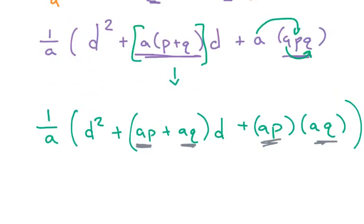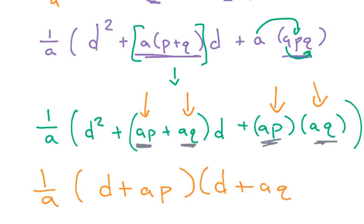So notice that p is a quantity and q is a quantity, and we said that that becomes p plus q and pq. So if that is true, then over here, this is one quantity, this is another quantity, and these are the quantity squared. What this means is that this factors out to d plus ap, times d plus aq.